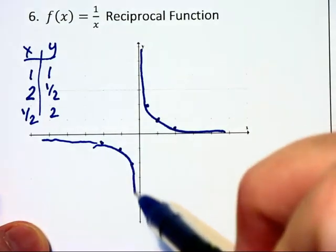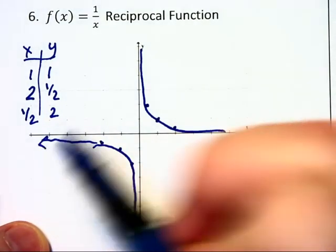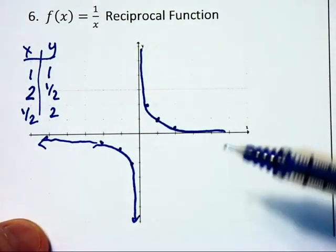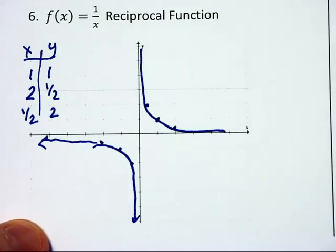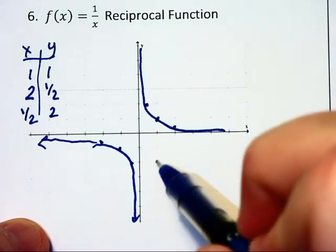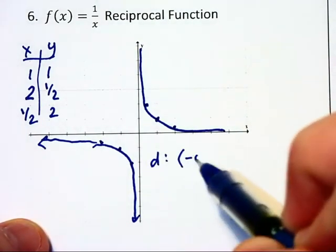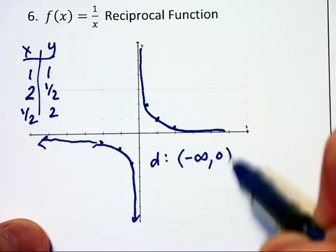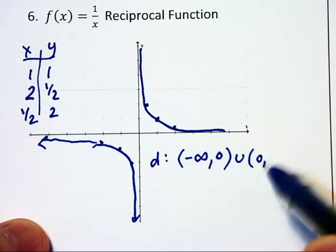And likewise we're going to have some matching points down here in the third quadrant. Now the graph is never going to touch the axes because it can never equal 0 for both y or x.